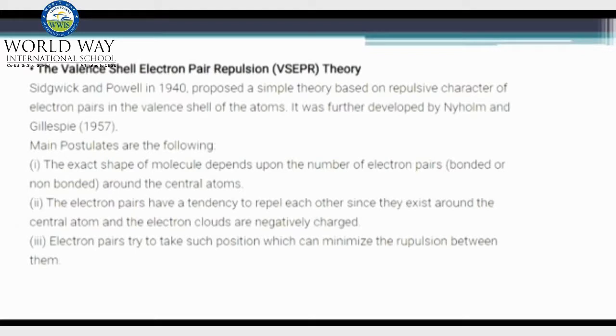It says that the exact shape of the molecule depends upon the number of electron pairs which are bonded or non-bonded around the central atoms. The electron pairs have a tendency to repel each other since they exist around the central atom and all the electron clouds are negatively charged. The electron pairs try to take such position so as to minimize the repulsion between them.